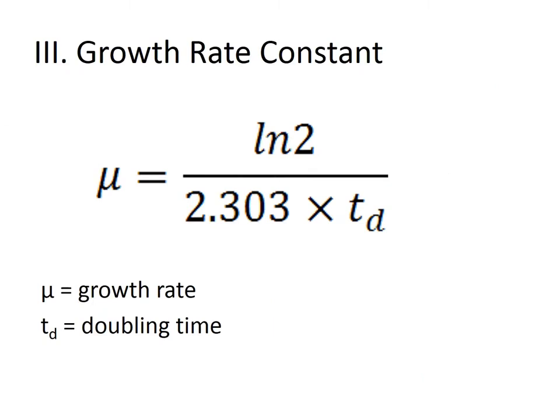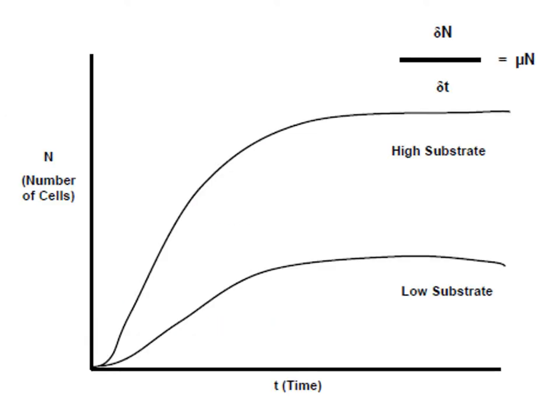When discussing growth rate (mu), there is a relationship: mu equals ln2 divided by 2.303 times td, where td is the doubling time. Each organism has its own potential to grow at a specific rate, attributed to its doubling time — defined as the time needed for a population to double in number.